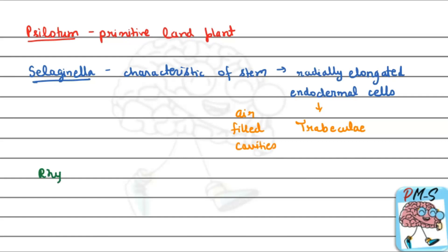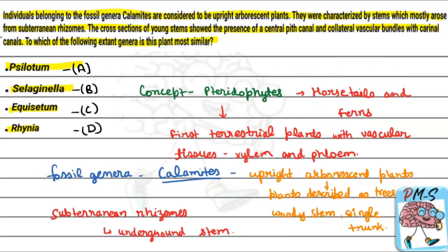Rhynia is also a pteridophyte but it is a fossil genus, not an extant genus, so it cannot be the answer. Therefore: option A (Silotum) — No. Option B (Selaginella) — No, it is trabeculate with air-filled cavities. Option C (Equisetum) — Yes, correct, because carinal canals, central pit canal, vallecular canals, and collateral vascular bundles are all present. Option D (Rhynia) — No, it is a fossil genus.